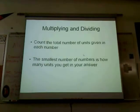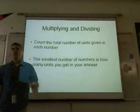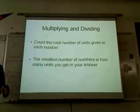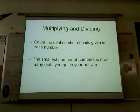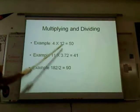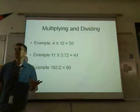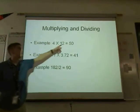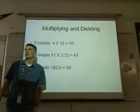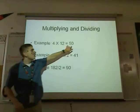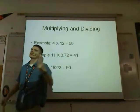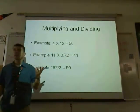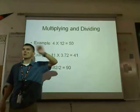Now multiplying and dividing is a little different. Now it's the total number of significant figures that you get, not decimal places. So 4 times 12 would normally be 48, but since you only get one digit here, you have to round to the first digit, which is 50. I would prefer you to write that as 5 times 10 to the 1.